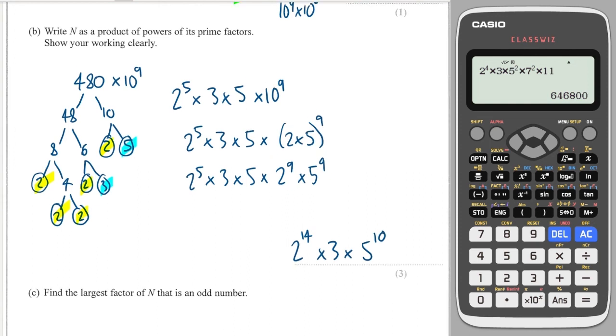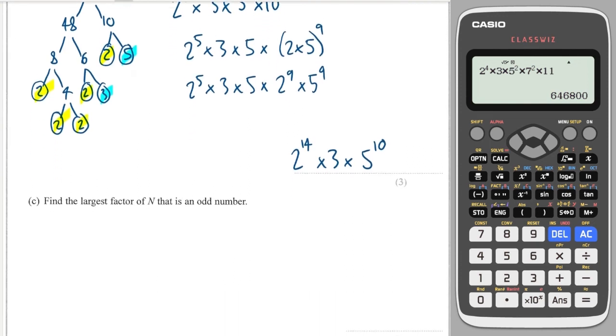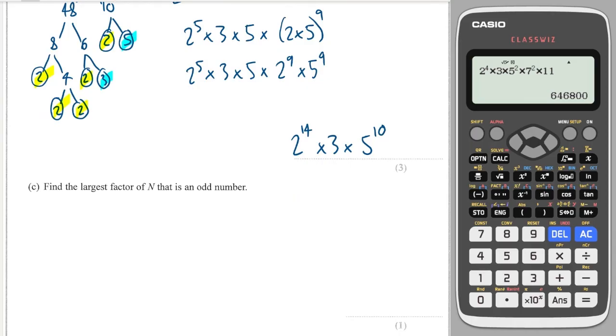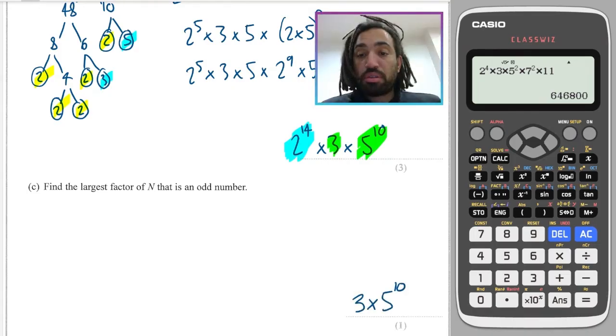And finally it says find the largest factor of N that is an odd number. So in order to be an odd number it cannot be divisible by 2, so this needs to disappear. And in fact an odd number can only have odd factors, so my largest number factor of N is going to be 3 times 5 to the power of 10. And we're done, that's prime factors completed. Like, share, and subscribe, see you for the next one.